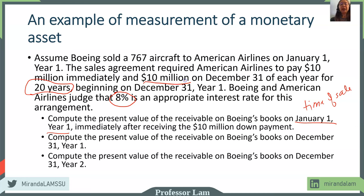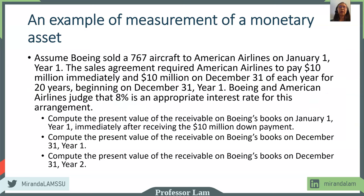It's $10 million dollars that will be paid on January 1st, and then $10 million dollars on December 31st for each of the next 20 years. We have to take into account the time value of money, so the accounts receivable is not simply $200 million. We have to account for the 8% interest rate and compute the present value.